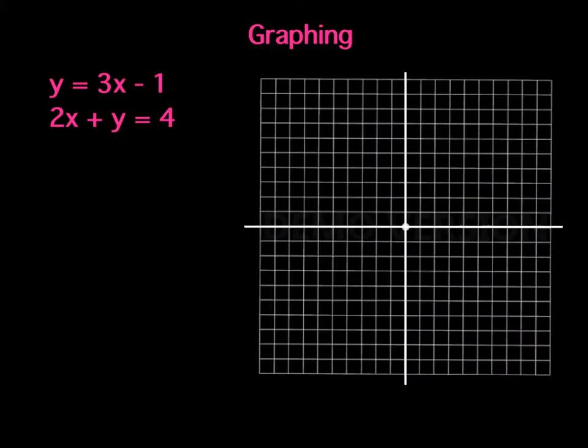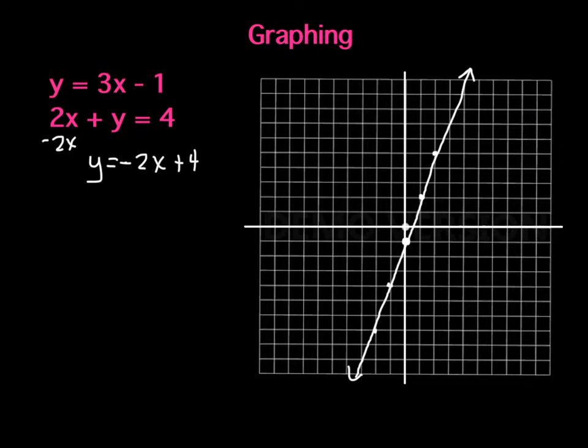If we look at these two graphs, the first one is obvious. The y-intercept is negative 1. My slope is rise 3 over 1, down 3 back 1. The second one I would have to solve for y, so I'm going to subtract 2x. I get y equals negative 2x plus 4. And the solution to this system would be this point right here, which is 1, 2.